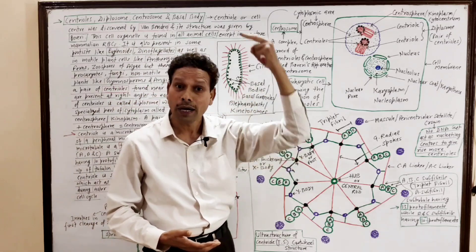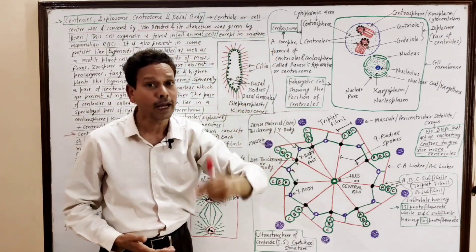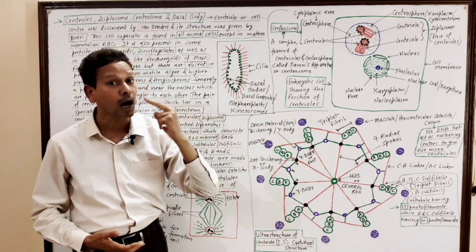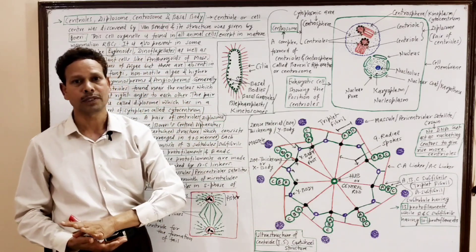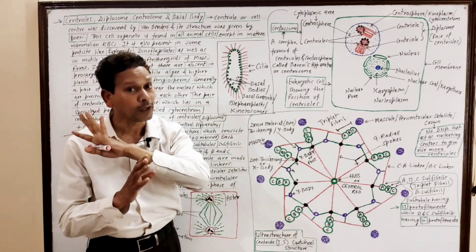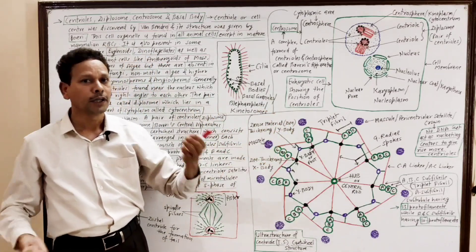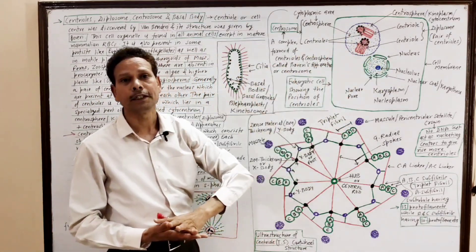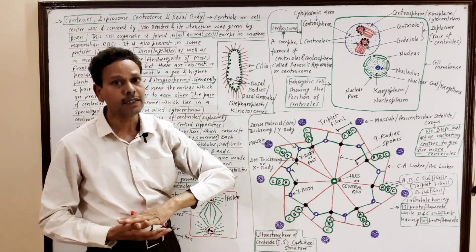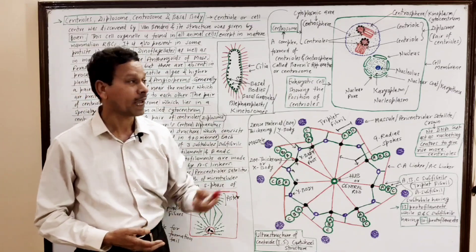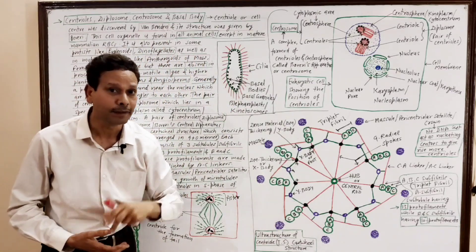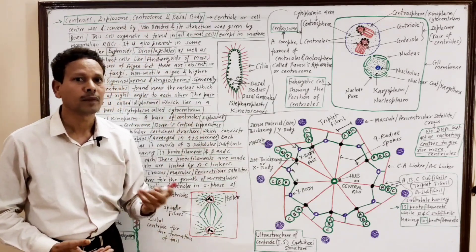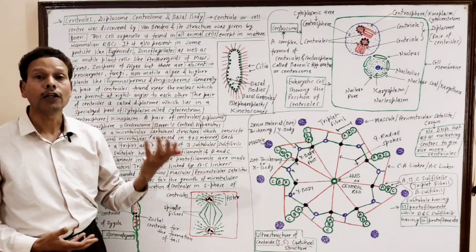In case of all animal cells, these centrioles are present, except in the case of mature mammalian red blood cells, which have no centrioles because mature mammalian red blood cells are without any cell organelles. So in mature mammalian red blood cells these organelles are absent, but in all other mammalian cells they are present. Centrioles are also present in most protists like euglenoids and dinoflagellates.